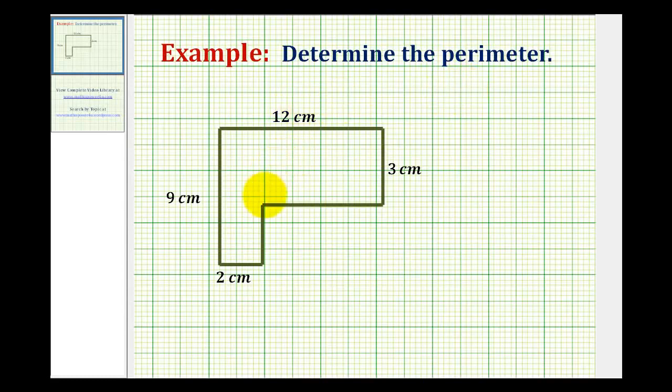We want to determine the perimeter of this L-shaped polygon. The perimeter would be the distance around the outside of this polygon. To determine the perimeter of any polygon, we just need to find the sum of the lengths of all the sides. But notice in this diagram, we're missing the length of this side here as well as this side here. But we do have enough information to determine the length of these two missing sides.